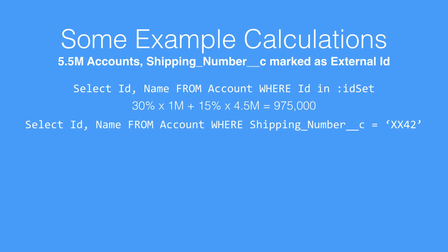Similarly, if we use the custom index of Shipping Number and put in a Shipping Number we're working with, we're allowed to retrieve 10% of the first million, which is 100,000, and then 5% of the remaining, which is another 22,500. If we put them together and we're retrieving less than 333,333 — in this case 122,500 — that is also a selective filter.